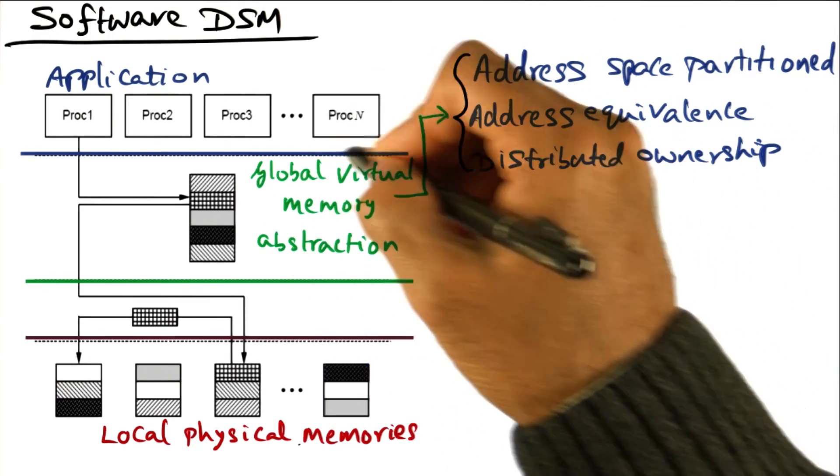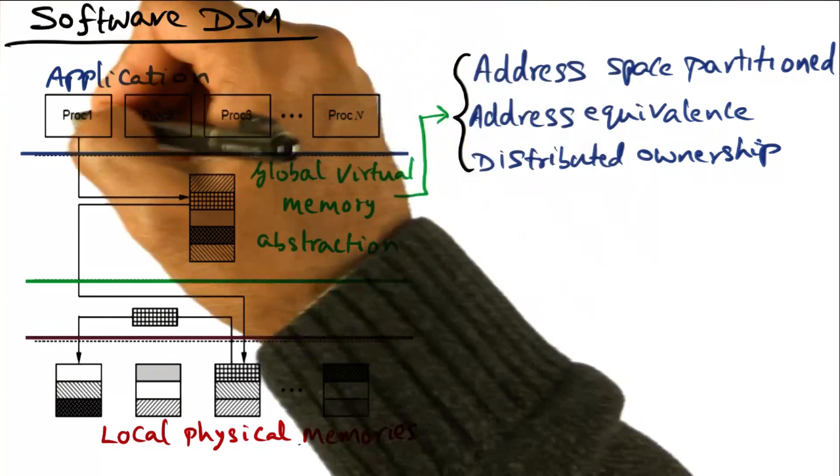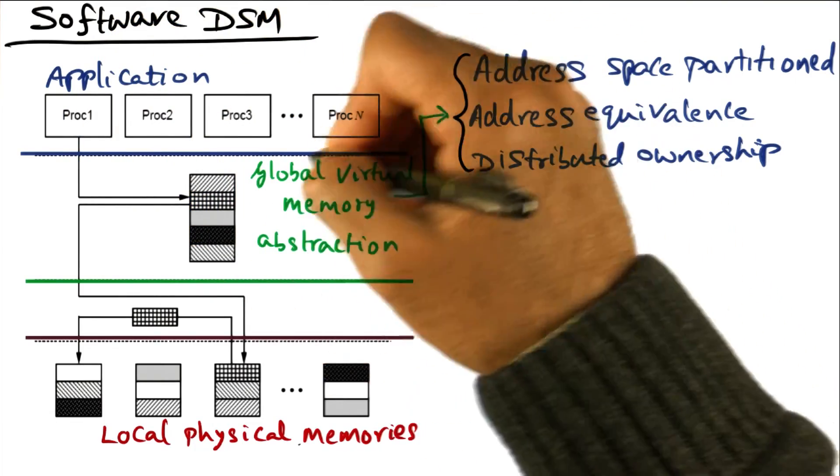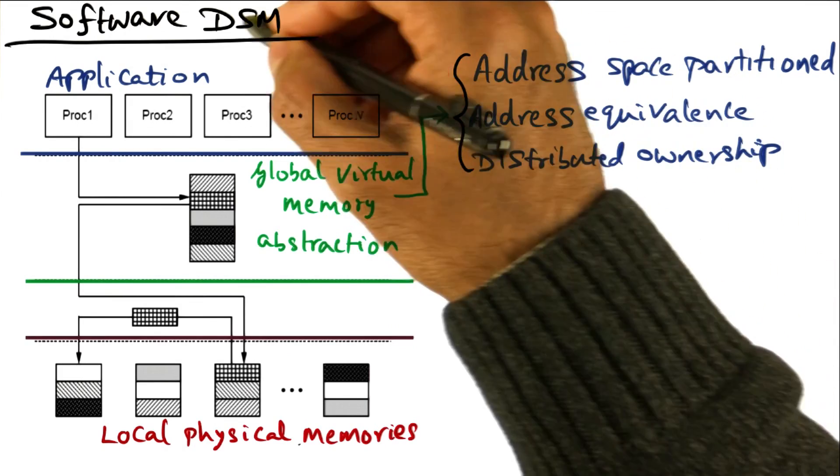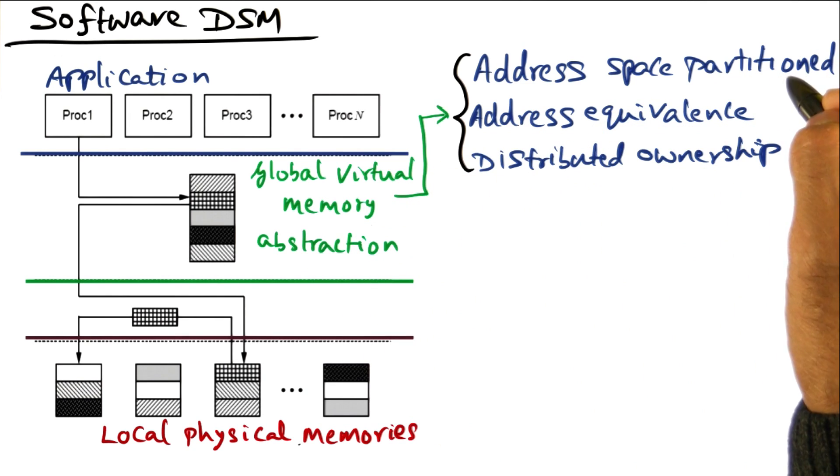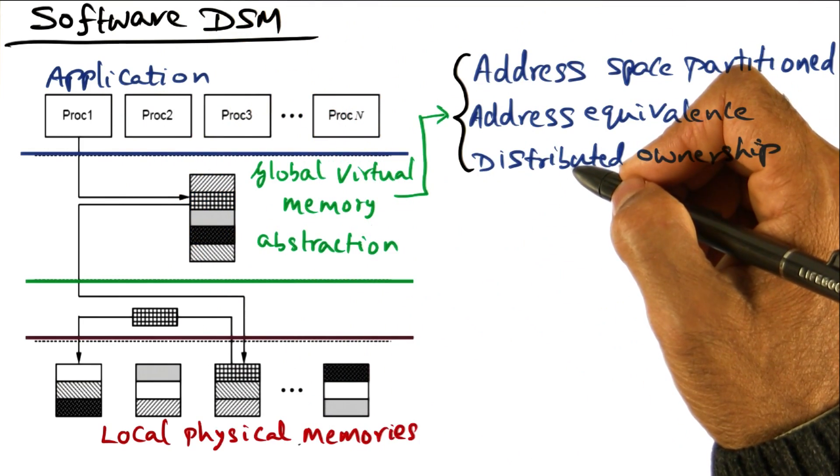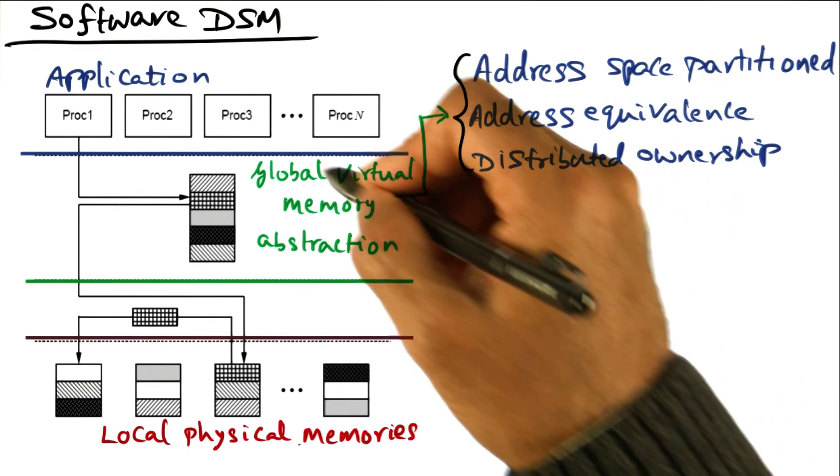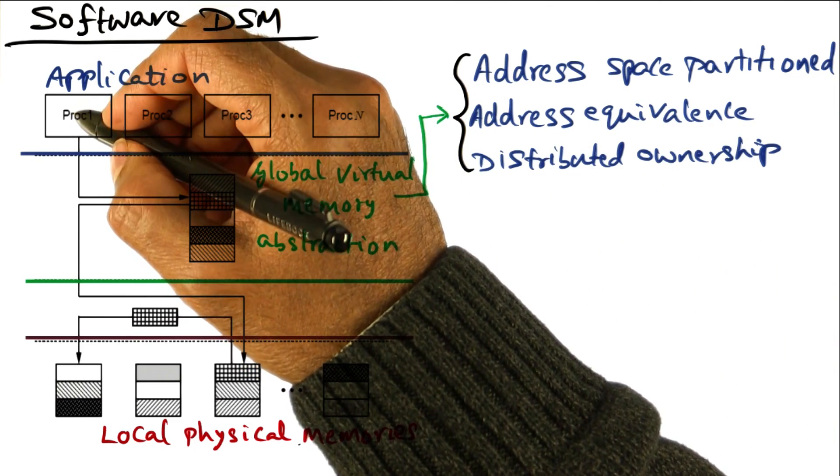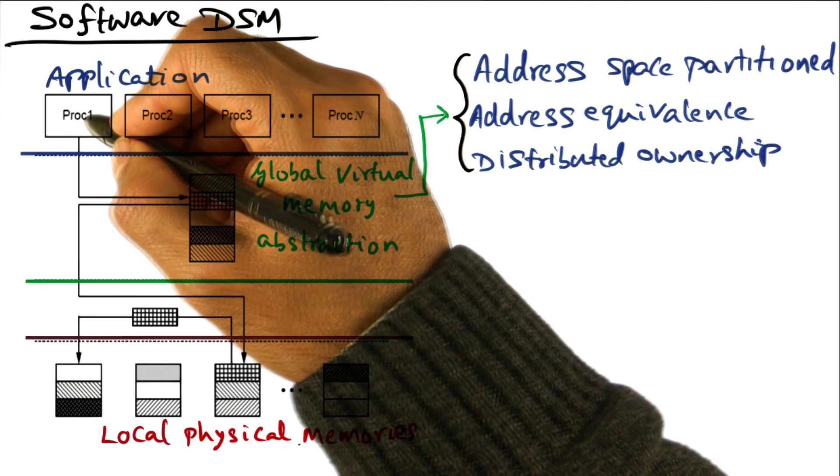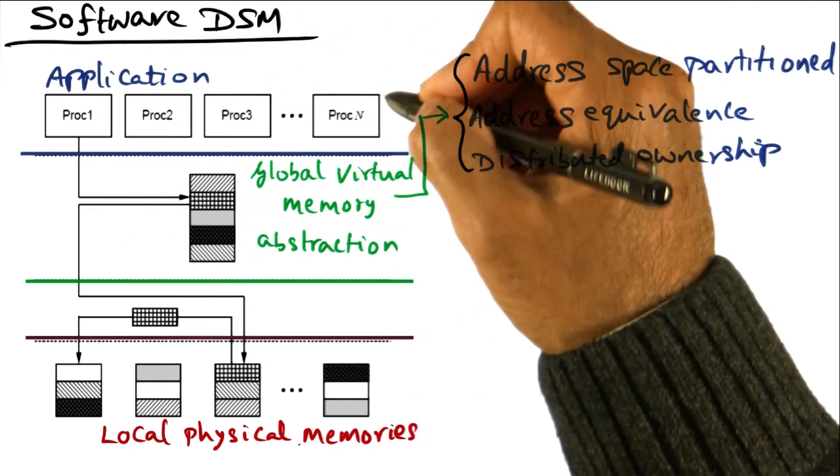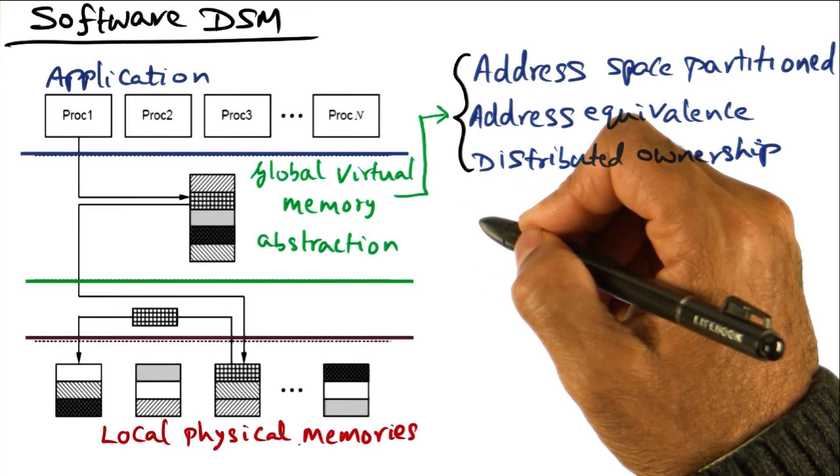So what we're going to do is, we're providing a global virtual memory abstraction to the application programmer running on the cluster. So the application programmer views the entire cluster as a globally shared virtual memory. Under the cover, what the DSM software is doing is it is partitioning the global address space into chunks that are managed individually on the nodes of the different processes of the cluster. From the application point of view, what this global virtual memory abstraction is giving is address equivalence. And that is, if I access a memory location x in my program, that means exactly the same thing, whether I access the memory location x from processor one or processor two and so on and so forth. That's the idea in providing a global virtual memory abstraction.